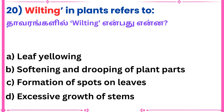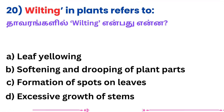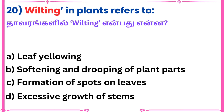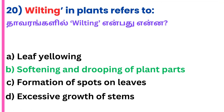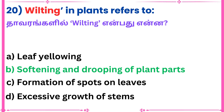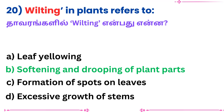Question 20: Wilting in plants refers to — Answer: Softening and drooping of plant parts.